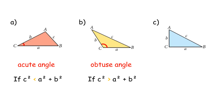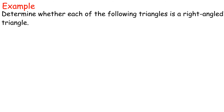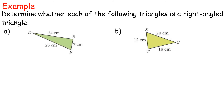C: If c² = a² + b², then the angle opposite to side c is a right angle. Example: determine whether each of the following triangles is a right-angled triangle.